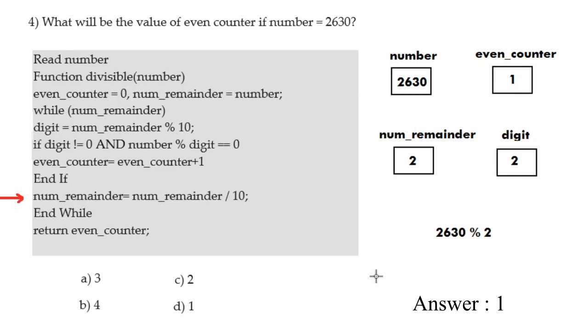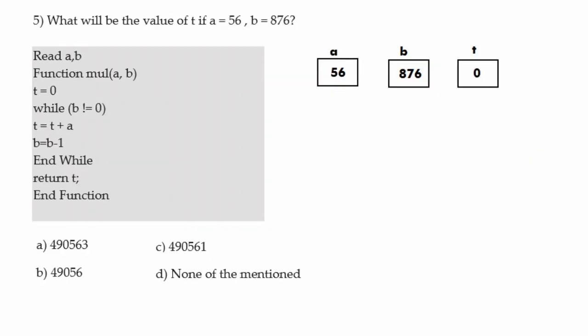The loop ends and we return even_counter, which is 1. So the answer is 1. Moving to the last question: we have A equal to 56, B equal to 876, and another variable T whose value is 0. Inside the function, we enter the while loop with condition B not equals 0, which is true.